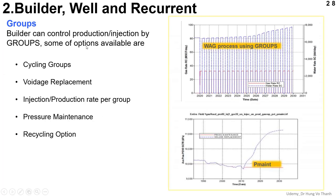We continue with the next function of the Well and Recurrent, we call it GROUPS. In the Builder, you can control production or injection by groups. And now, there are some options available for you, such as the cycling groups.